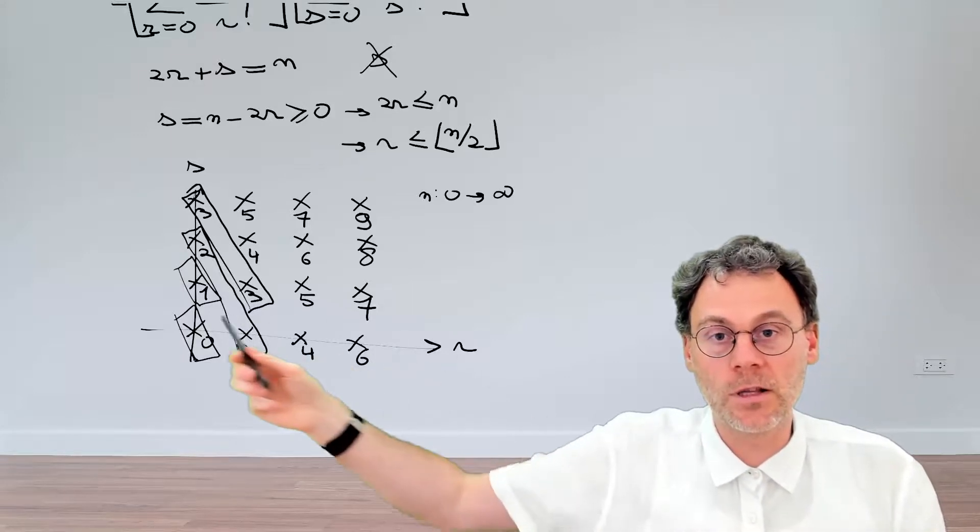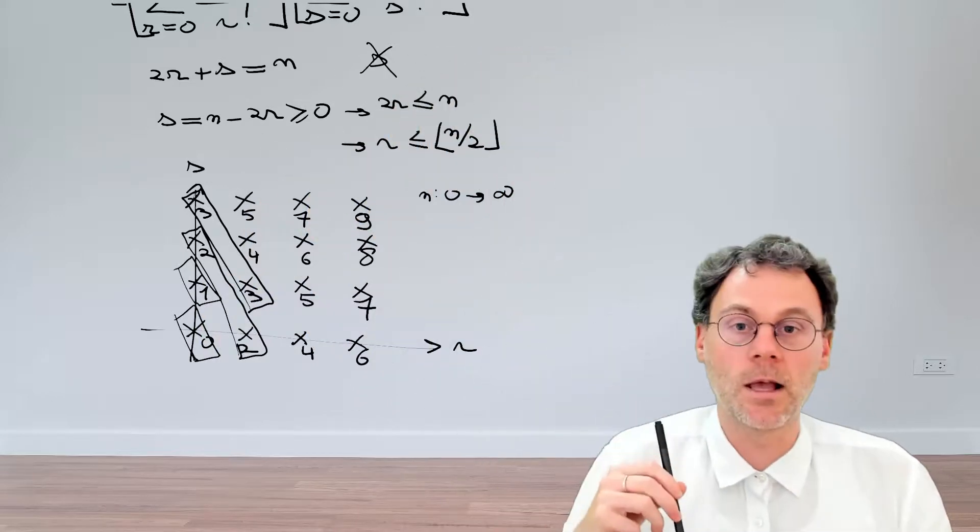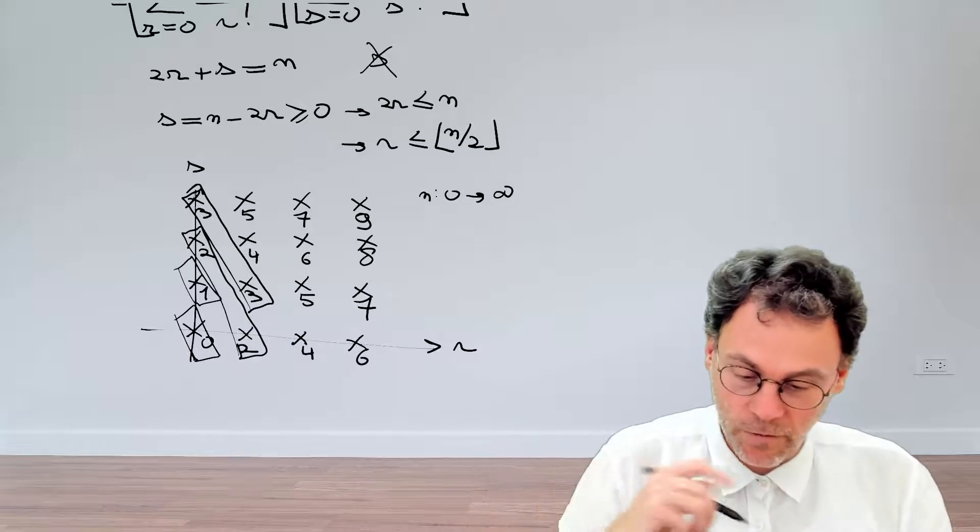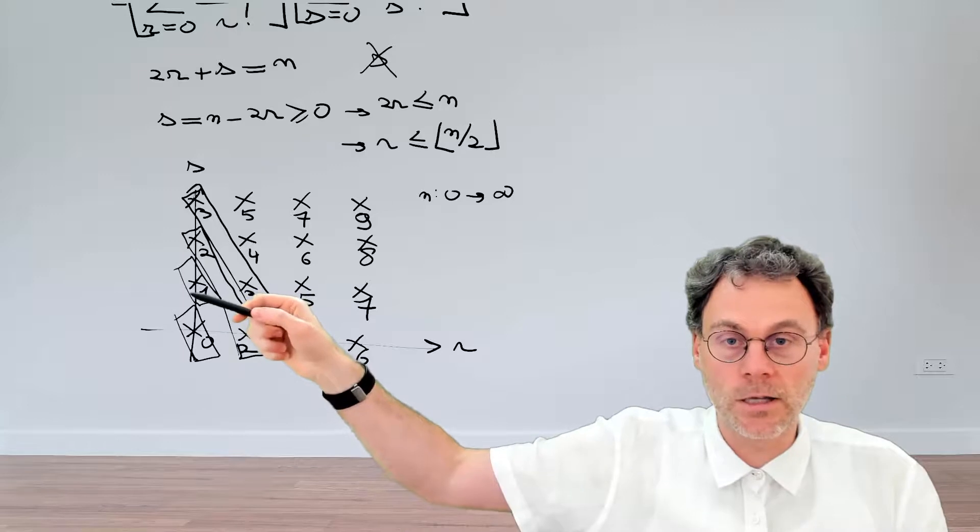So n running from 0 to infinity basically means we work our way through this diagram like this. And then for a given value of n, for a given value of n, let's have a look at what happens to r.